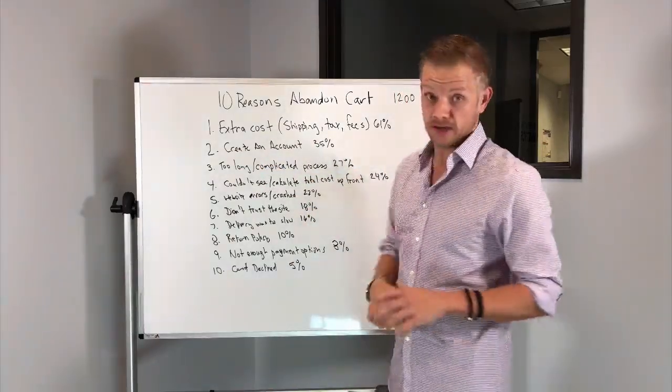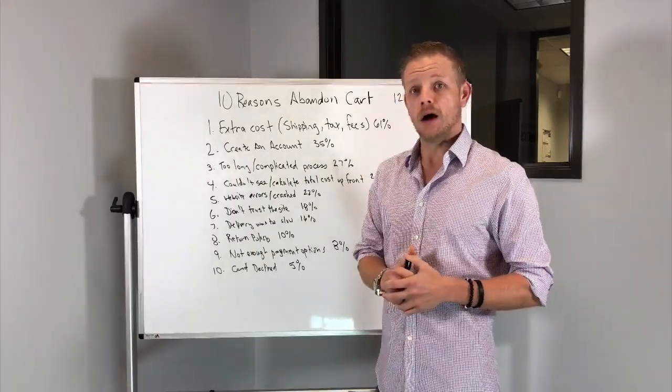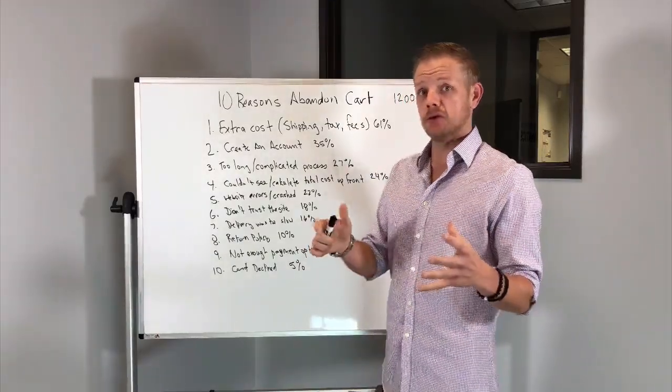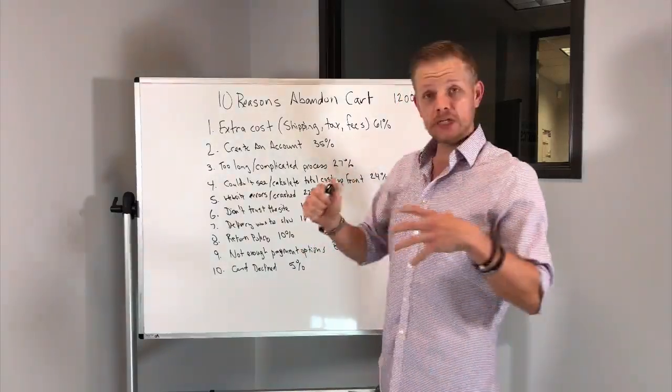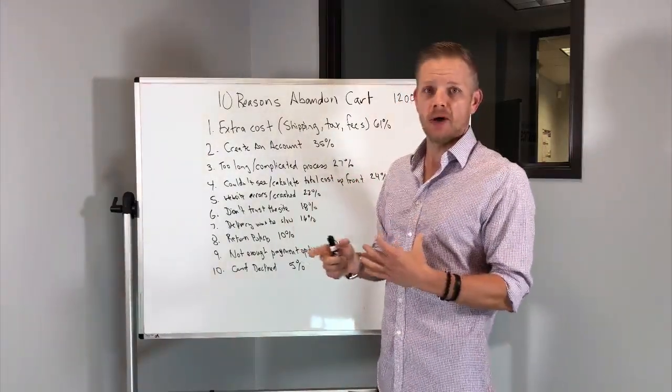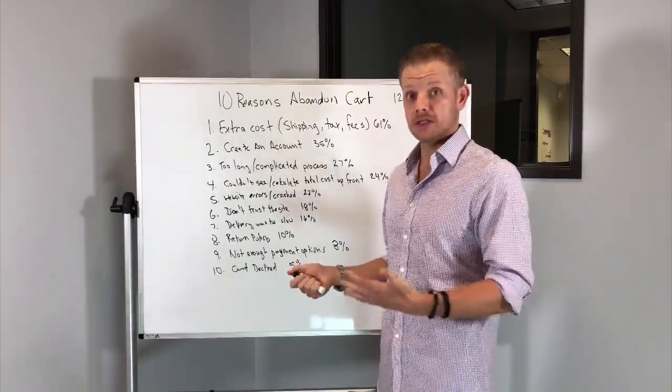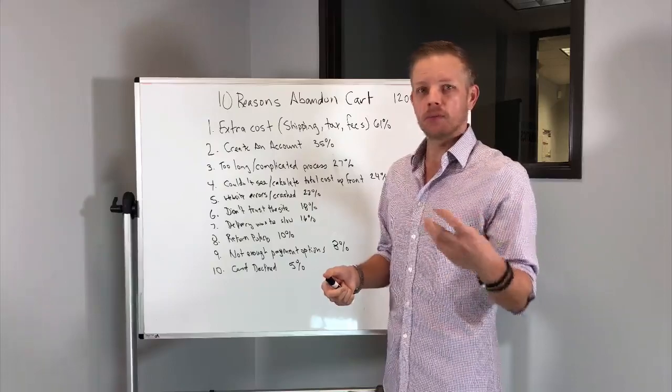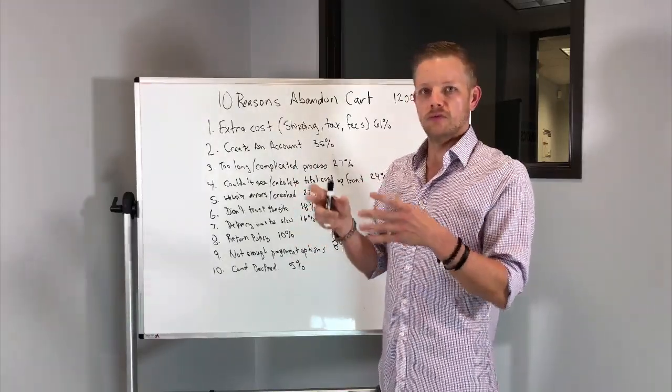Number three at 27% is too long or too complicated of a process. This kind of goes back to number two with creating an account, but you want to streamline that process as quickly as possible. If you can have a one page checkout, the better it's going to be.